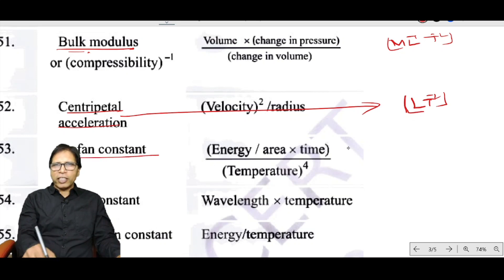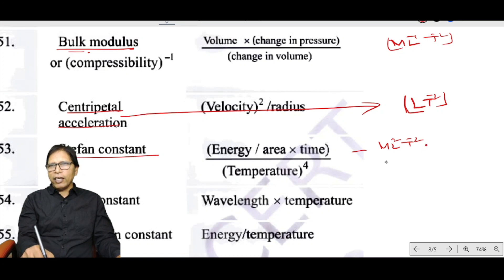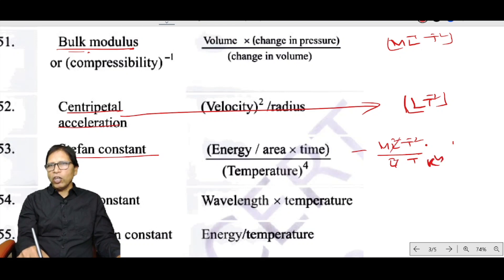Stefan constant is derived from energy divided by (area × time × T⁴): ML²T⁻² ÷ (L² × T × K⁴). The L² cancels, giving the dimension MT⁻³K⁻⁴.